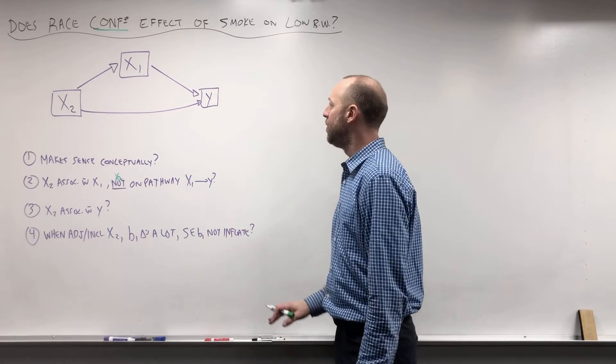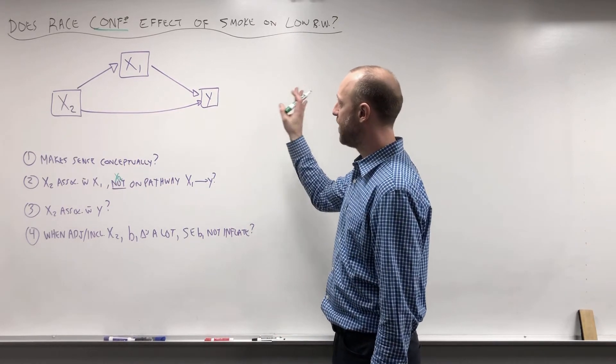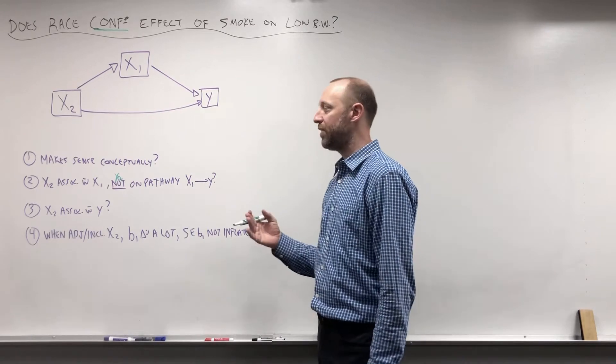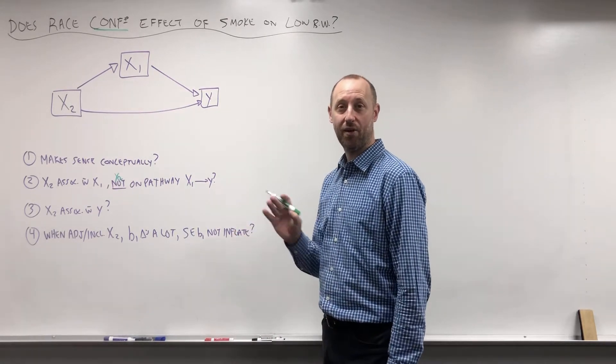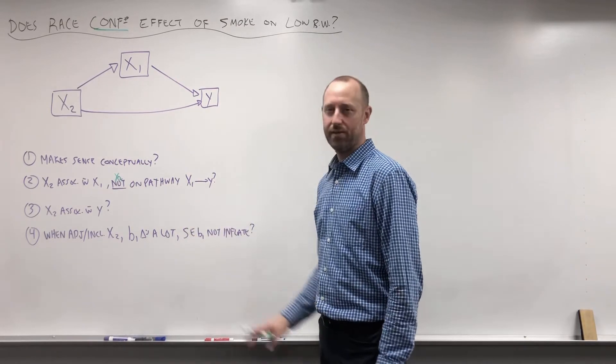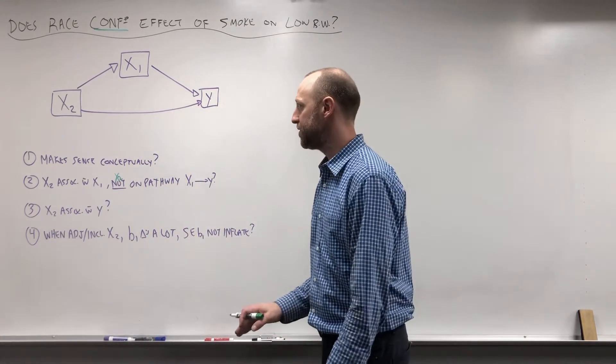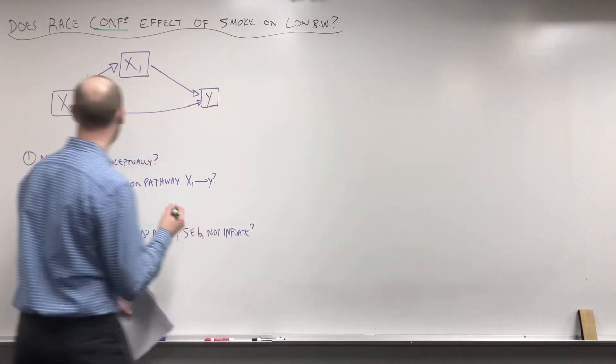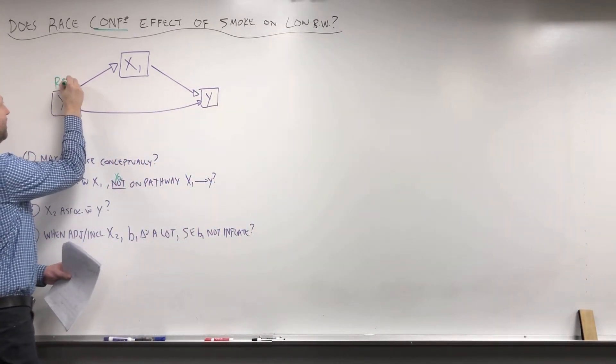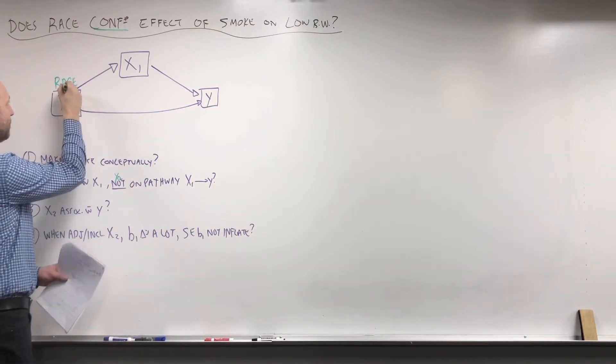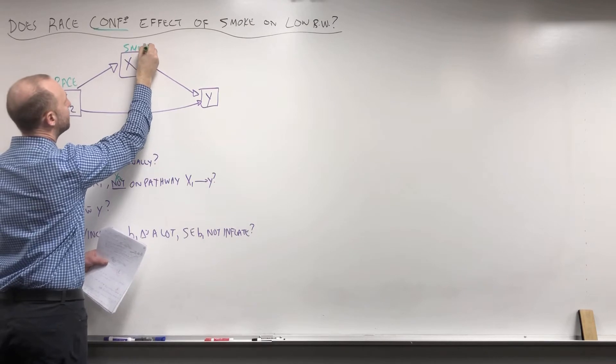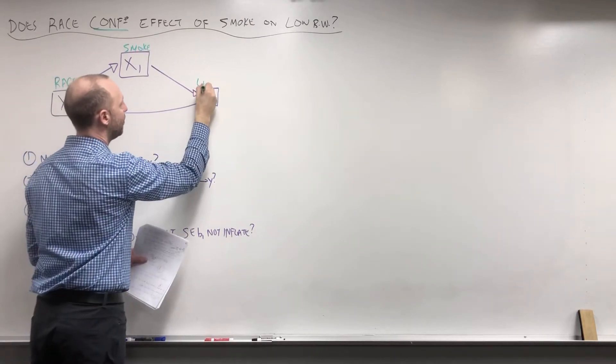We want to think about does race make sense as a confounder. And in a separate video, we'll look at examining it in R on this data set, examining what happens numerically and seeing if all these things fit as well. But first, let's spend a bit of time thinking conceptually. So here, does this diagram make sense and does this criteria make sense? Here's race, here's smoking, and here's low birth weight.